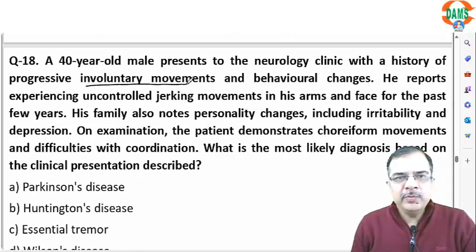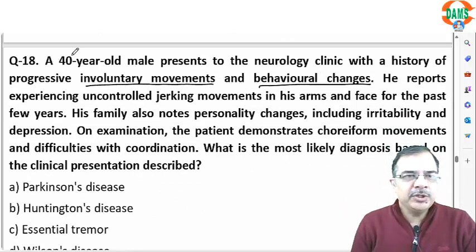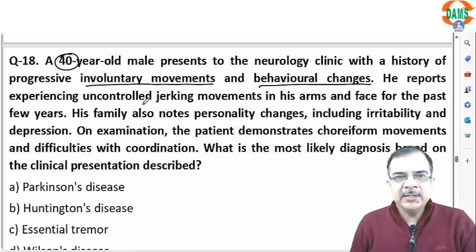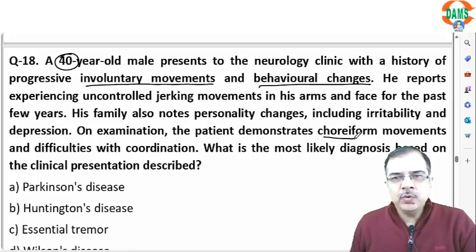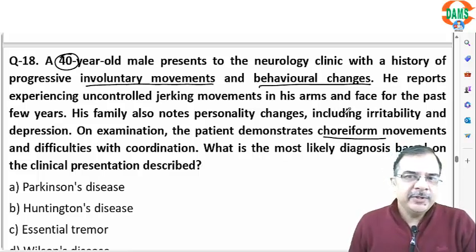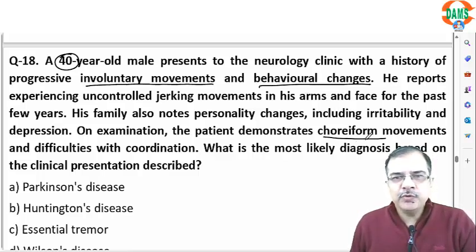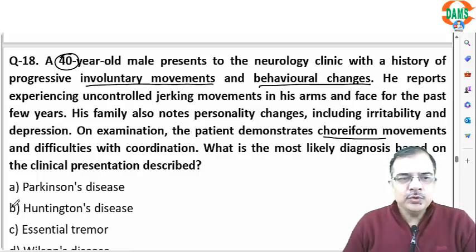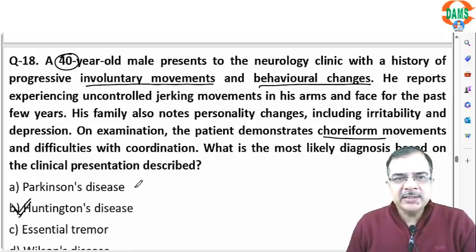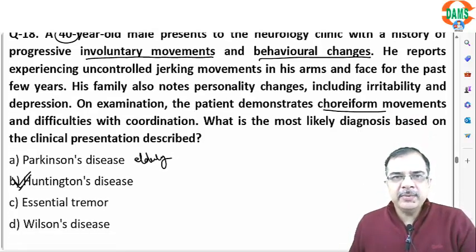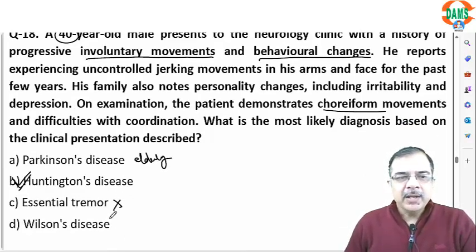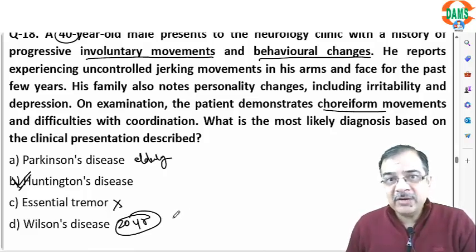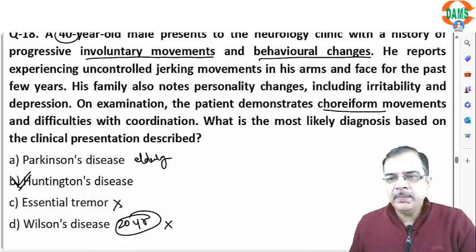Question 18: a patient has involuntary movements and behavioral changes. Age is 40 years. The patient experiences uncontrolled jerking movements in the arm and face, and family notes personality changes including irritability and depression. The patient demonstrates choreiform movements with difficulty in coordination. These features — behavioral abnormalities, jerky movements, choreiform movements at age 40 — favor Huntington's disease. Parkinson's is seen in the elderly; essential tremor has no behavioral changes. Wilson disease occurs around age 20 with liver involvement and KF rings, which are absent here.